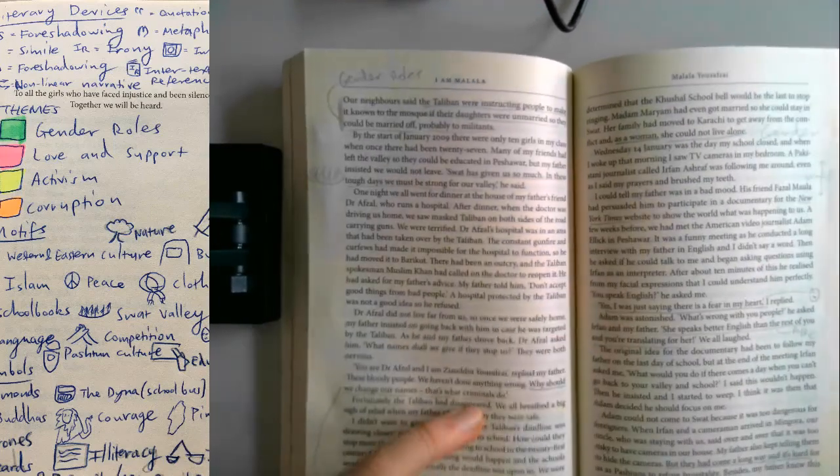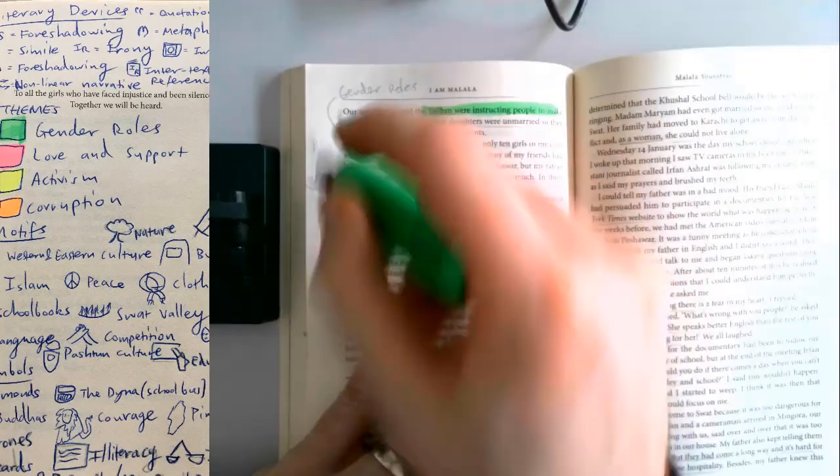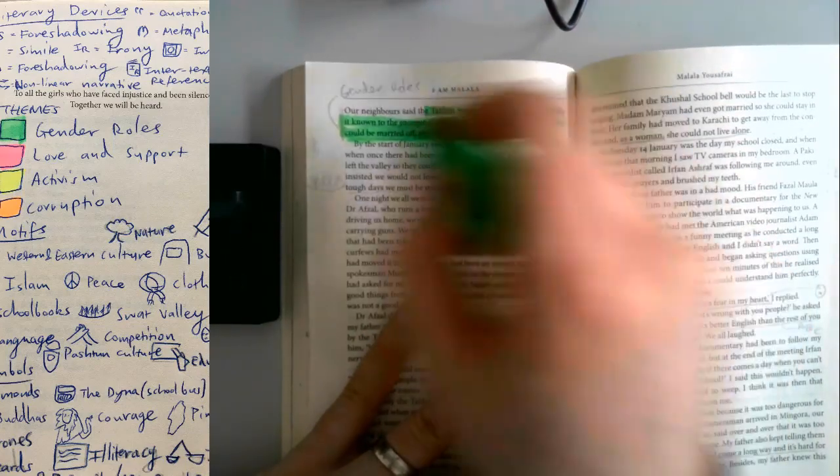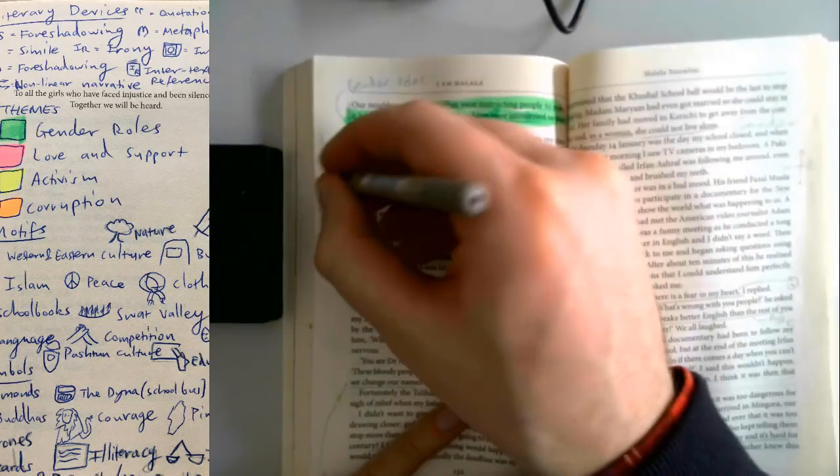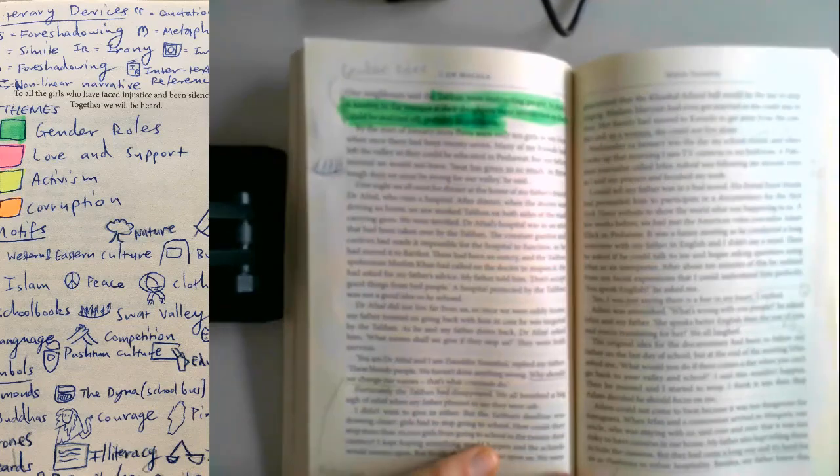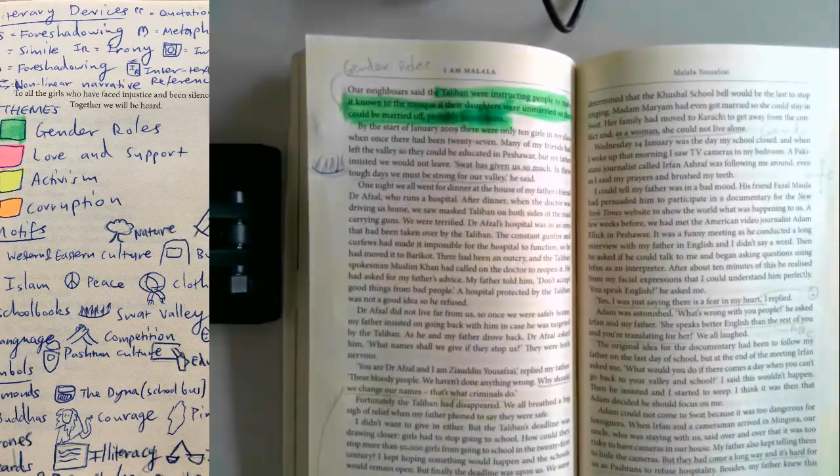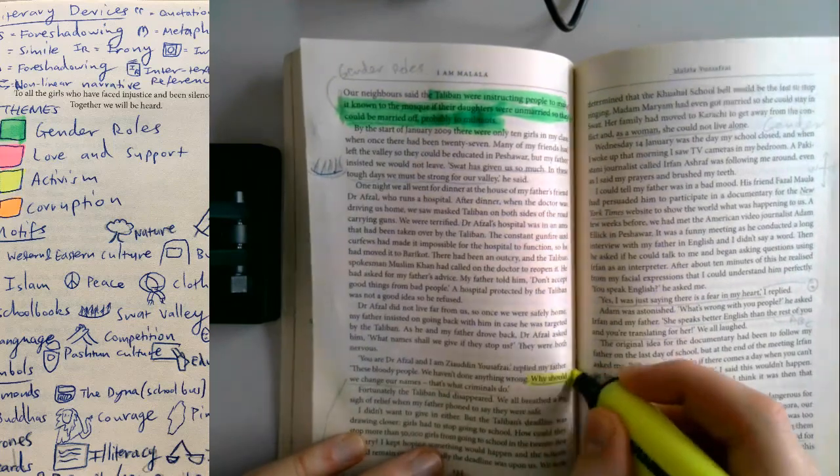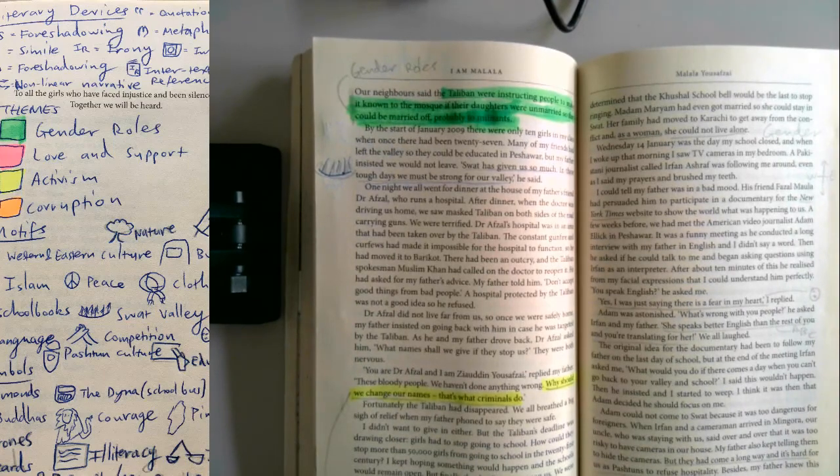We've got gender roles again. A neighbour said Taliban were instructing people to make it known to the mosque if their daughters were unmarried, so they could be married off, probably to militants. SWAT has given us so much in these tough days, we must be strong for our valley, he said. Why should we change our names? That's what criminals do. You really get the impression of these pressures mounting up.